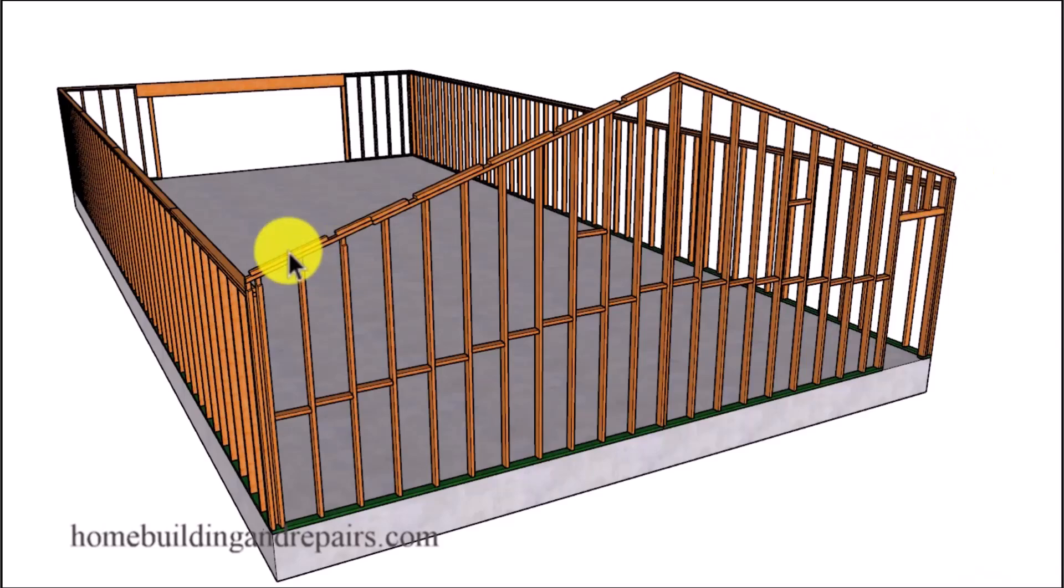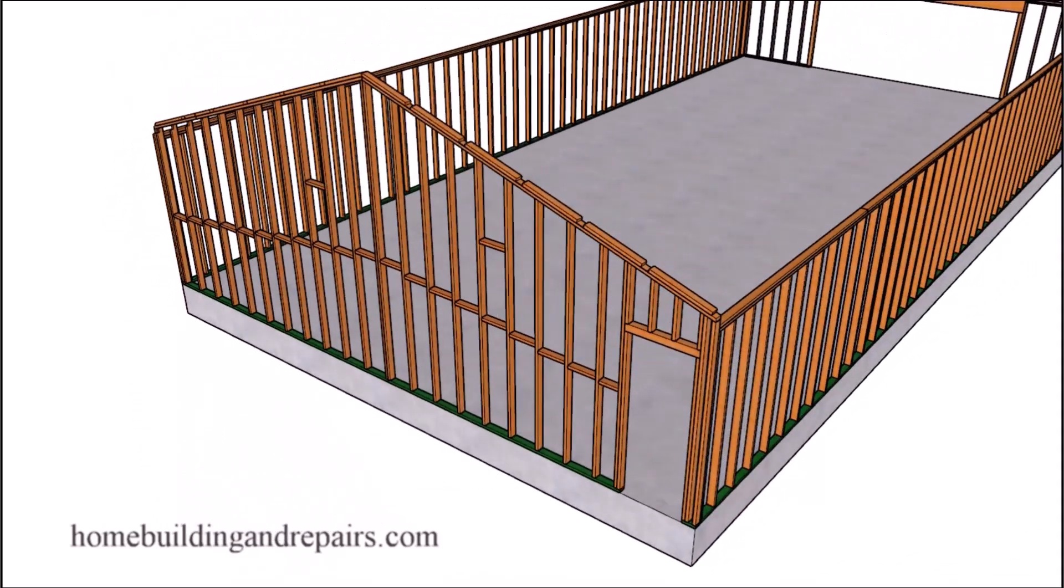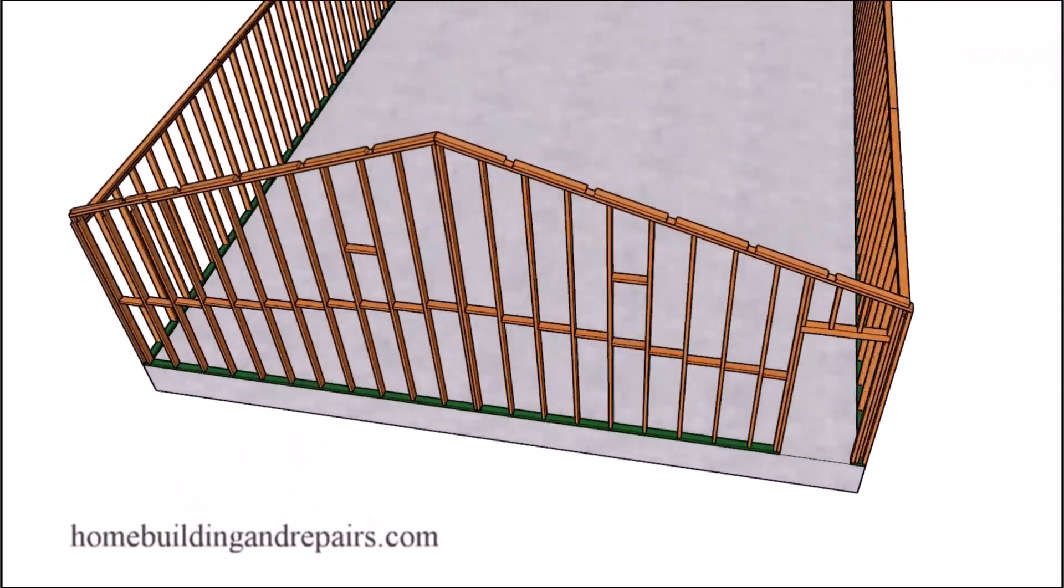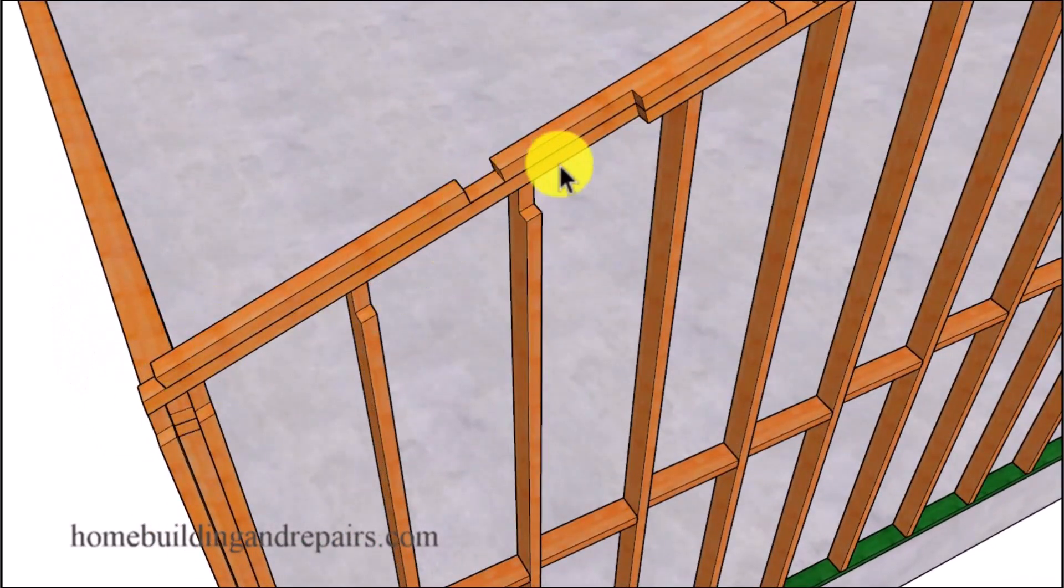And with our balloon framed rake wall here, I will also provide you with two different ways to finish off the corners here for the roof rafters. And of course, I will provide you with the most common method along with something a little more tricky over here where we're going to notch the rafter into the wall framing. And then our lookouts will be sitting in these notches here.